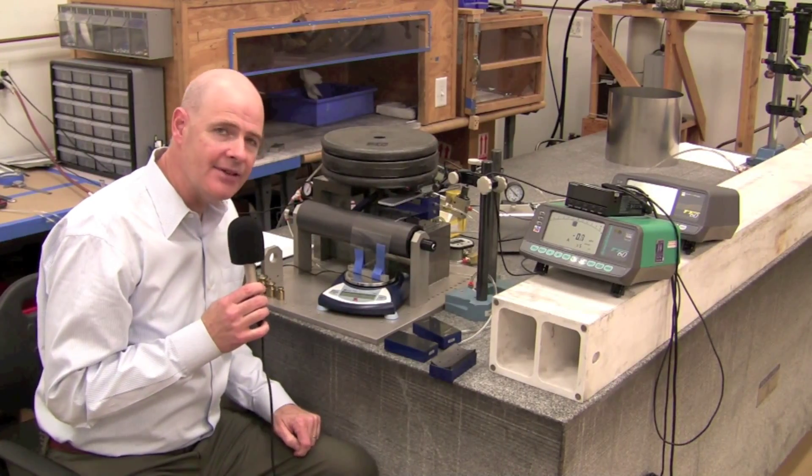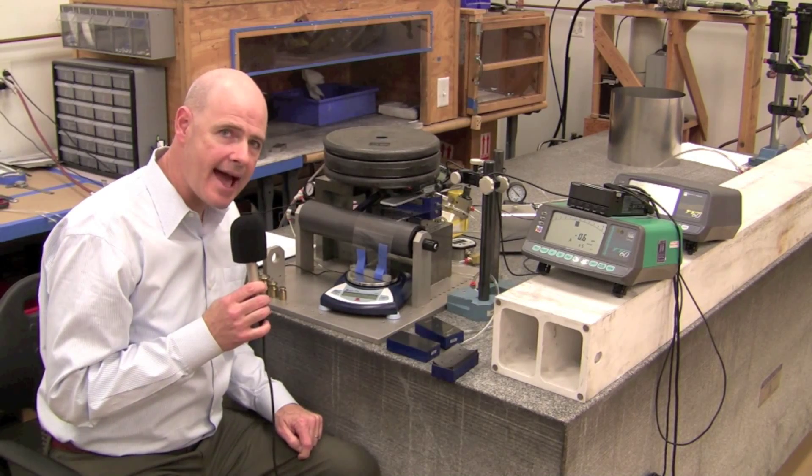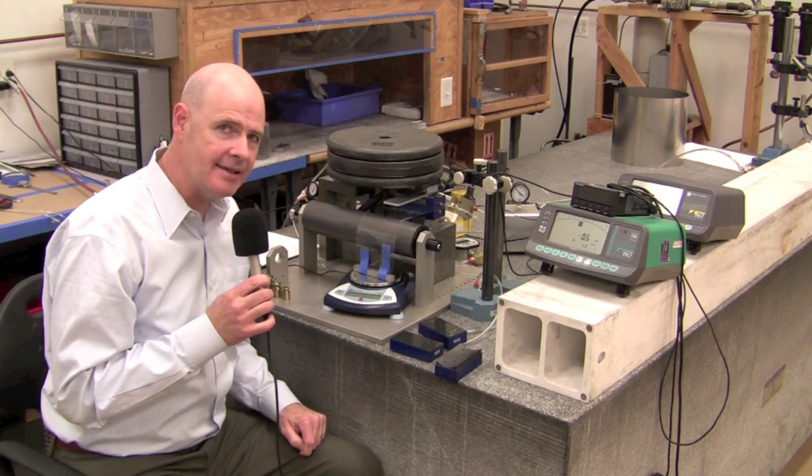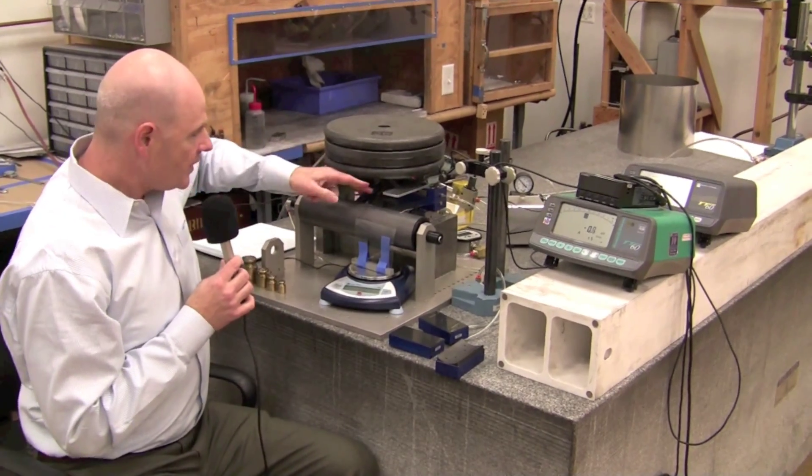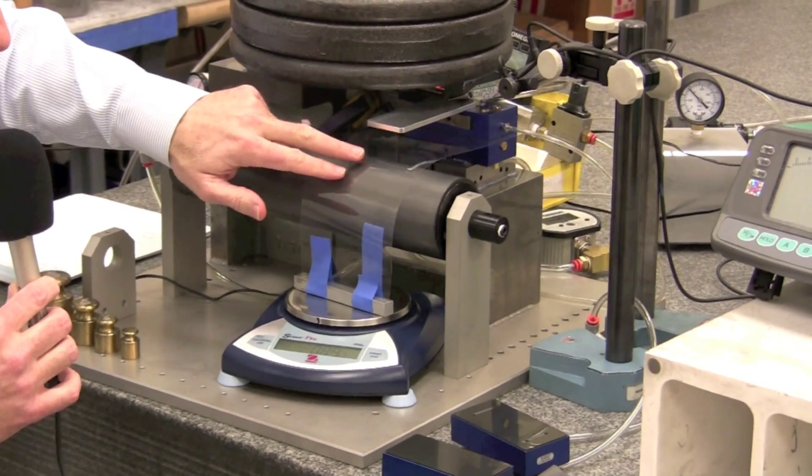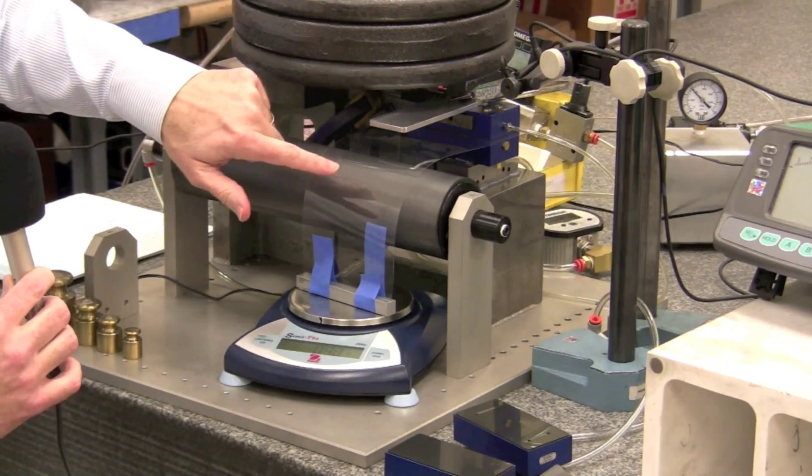In order to understand the viscous shear effect going on in the gap, we've modified the setup in order to study different variables. We've switched from the stainless steel belt to a flexible film. This film is used in the manufacture of electronic circuits.